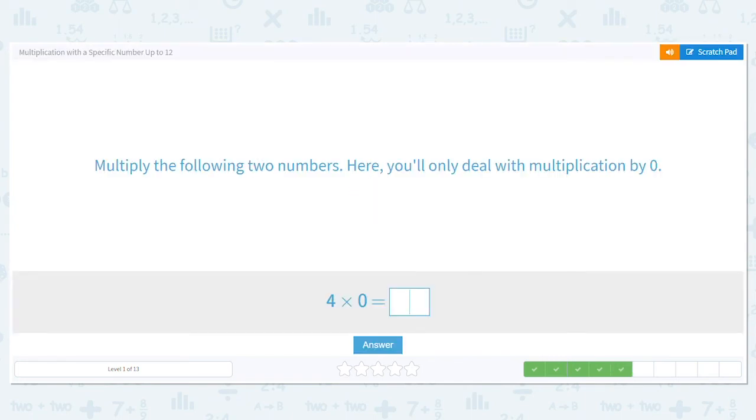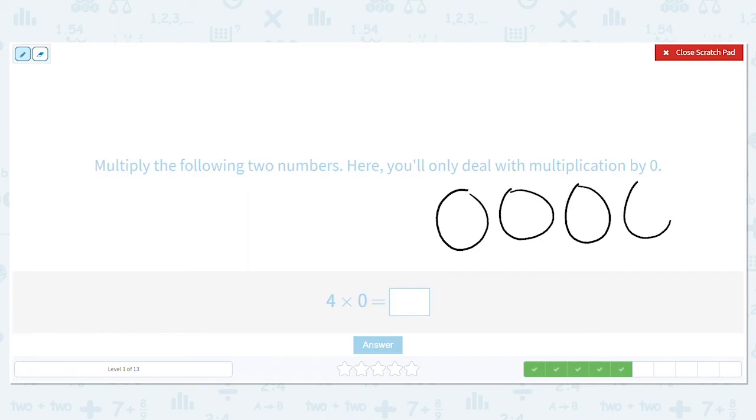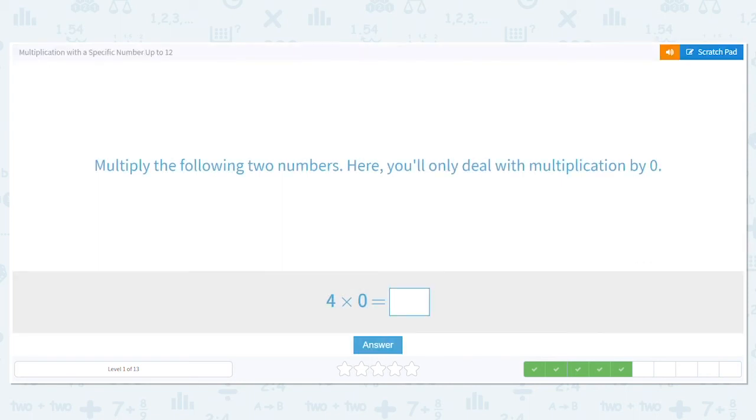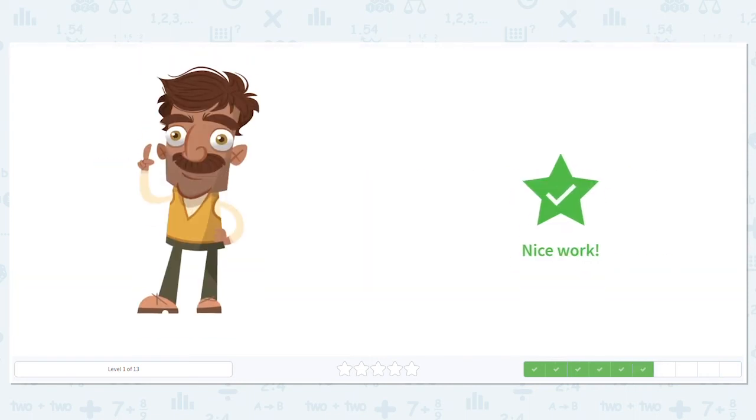Okay, let's do another one. Four times zero. That's saying I have four groups and there's nothing in any of those groups, so how many total items do I have?